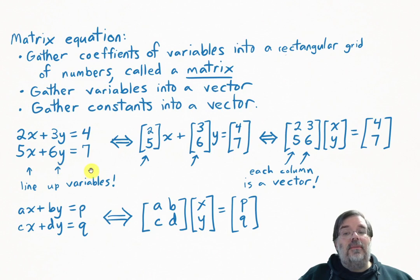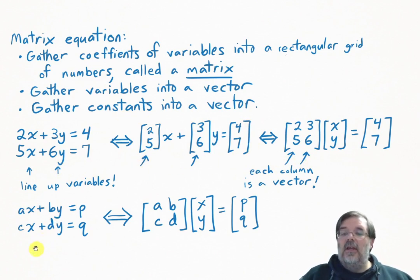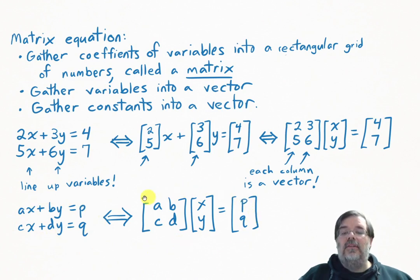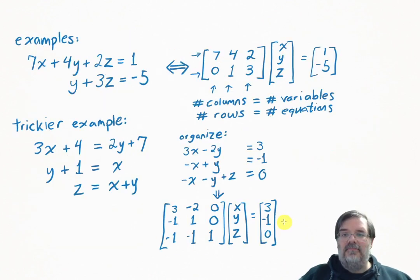If you're converting from a system of equations to a matrix equation, you don't have to write the intermediate vector equation. You could skip right to the matrix equation. I want to make sure everyone is comfortable going from any one of these forms to any other form.